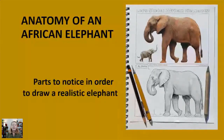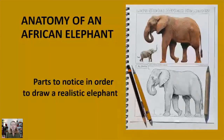Basically, the anatomy of an African elephant — the parts to notice in order to draw a realistic elephant. I try to teach you how to draw everything in the world, and there are only two things you need to know to draw anything, whether it's an elephant, a cat, a dog, a landscape, or buildings. All you have to know are the parts or anatomy to understand very well, and then also some drawing skills. We're going to be talking about both of those today.